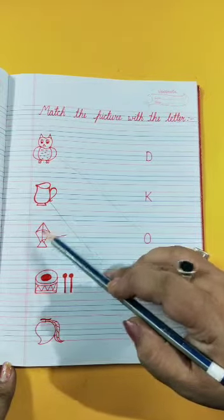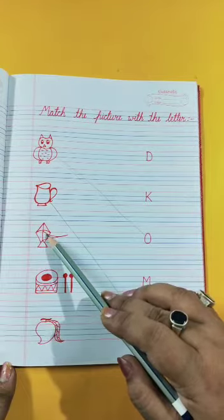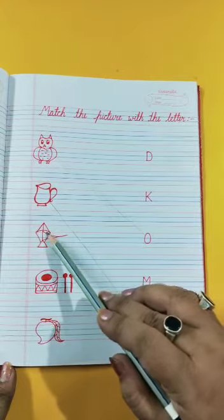Kite starts with the letter K. So you have to match Kite with the letter K.